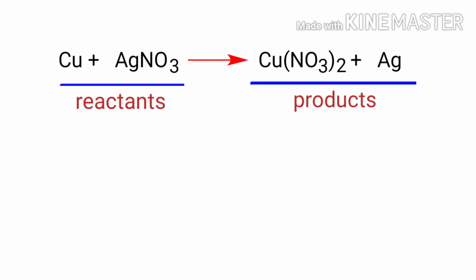In this equation the reactants are copper and silver nitrate and the products are cupric nitrate and silver. If you look at this equation, the equation is not balanced.